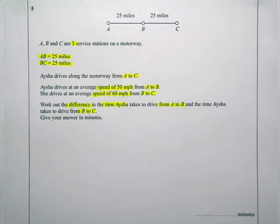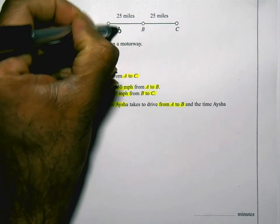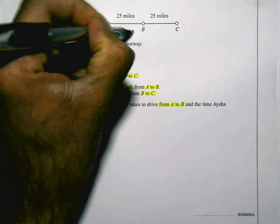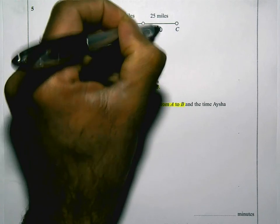So the information I have, I'm going to put some stuff on the diagram above. I know that from A to B she drives at 50 miles per hour and from B to C she drives at 60 miles per hour.